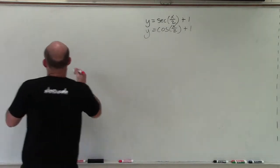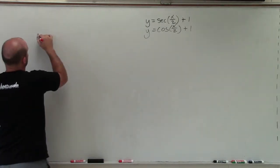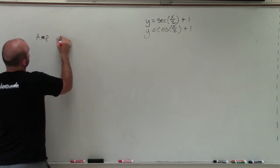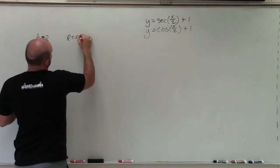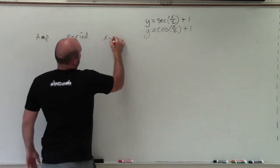So to graph cosine, we need to go through our main important pieces of information. We need to understand what the amplitude is. We need to know what the period. We need to know the x scale.